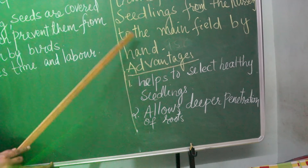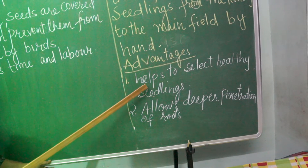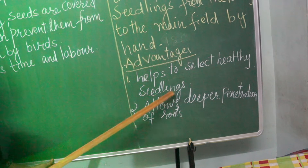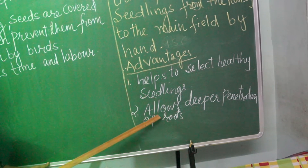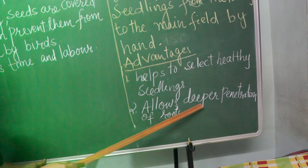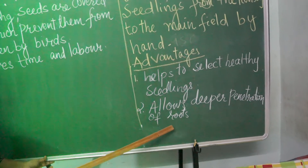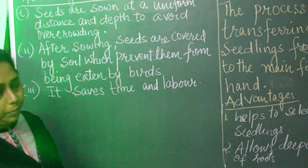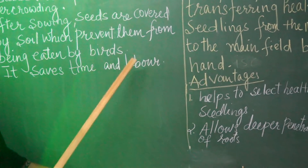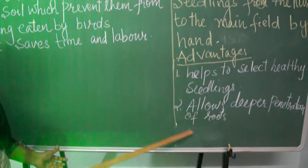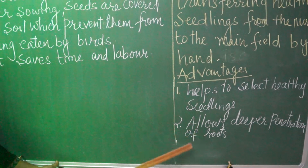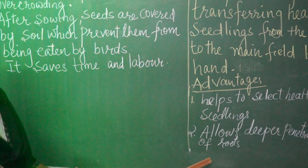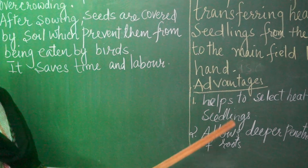What are the advantages of transplantation? First, it helps to select healthy seedlings. Second, it allows deeper penetration of roots. Also, proper distance and depth can be maintained, and the plants can germinate in a proper way. These are the advantages of transplantation.